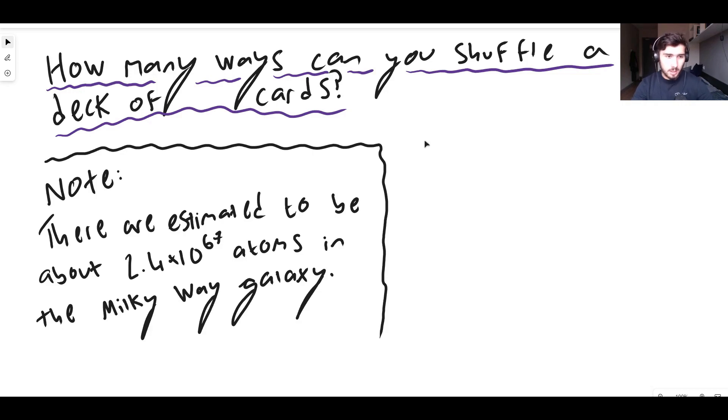There are an estimated 2.4 times 10 to the 67 atoms in the Milky Way galaxy. That means basically 2.4 times a 10 followed by about 67 zeros. Well, 66 zeros really. 2.4 times 10 to the power of 67. It's an absolutely massive number. Incomprehensible. It is billions and billions and trillions and trillions of quadrillions of atoms.